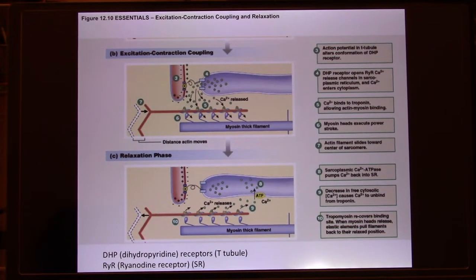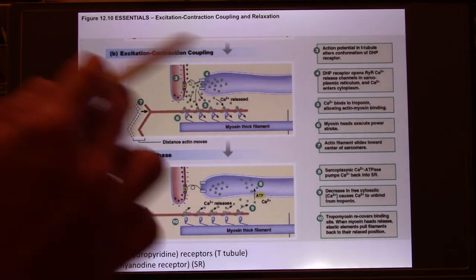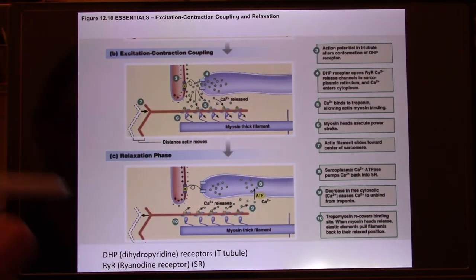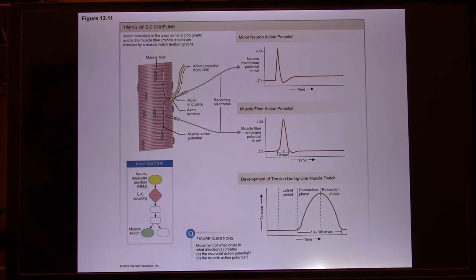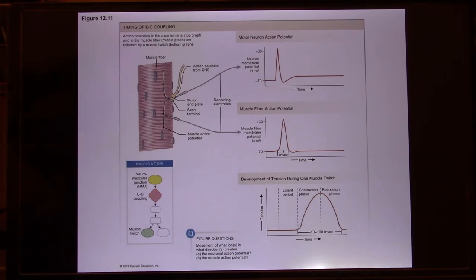We talk about EC coupling in skeletal muscle and cardiac muscle — they use exactly the same molecular mechanism: still active myosin, still calcium-triggered contraction. But cardiac muscle is more advanced; it does not have the shortcoming of skeletal muscle.